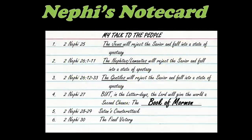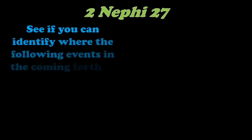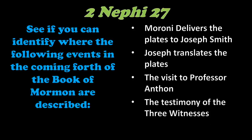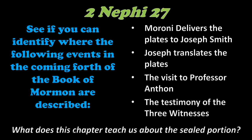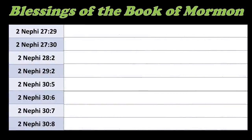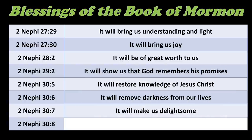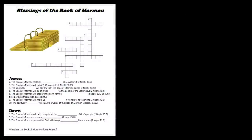For 2 Nephi chapter 27, I have an assignment: read through it and identify all the major events in the coming forth of the Book of Mormon — where it talks about Moroni delivering the plates to Joseph, the translation, the visit to Professor Anton, and the testimony of the three witnesses. You'll also find what's written in the sealed portion of the book. If I were teaching, I'd focus on the question: what can the Book of Mormon do for us?